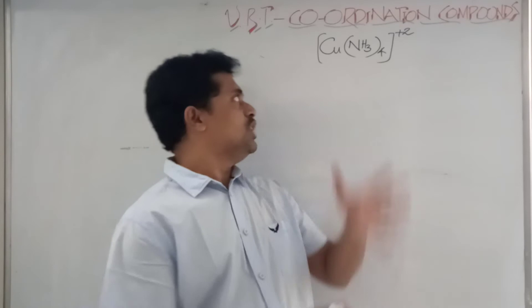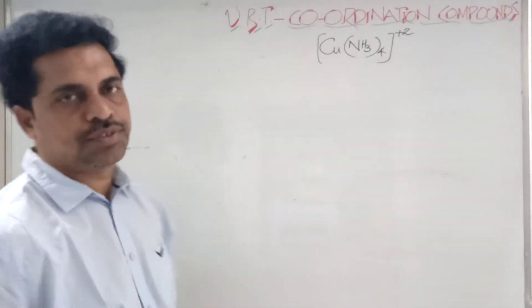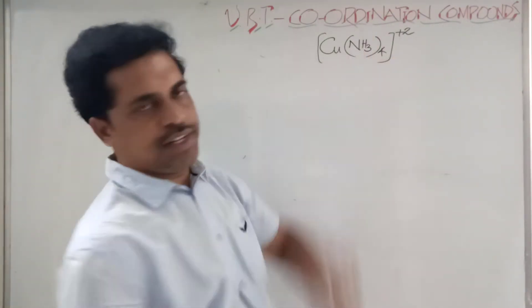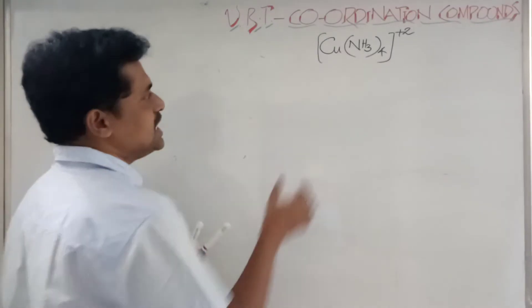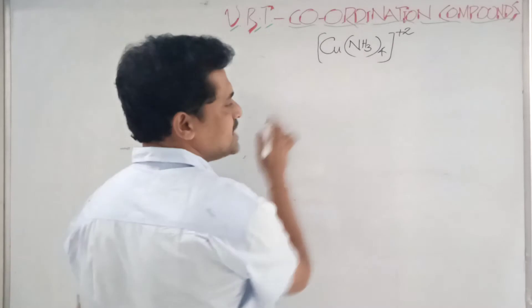Hello, now we will discuss tetra-amine copper(II) ion. Four ammonias are there - tetra-amine copper(II) ion. You can directly say the oxidation state of copper is +2 because ammonia is neutral, so copper has +2 oxidation state.